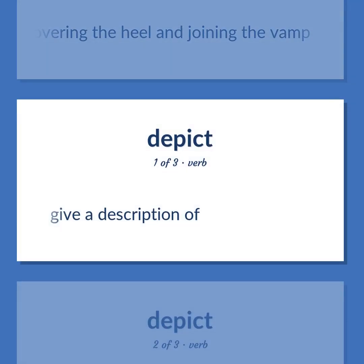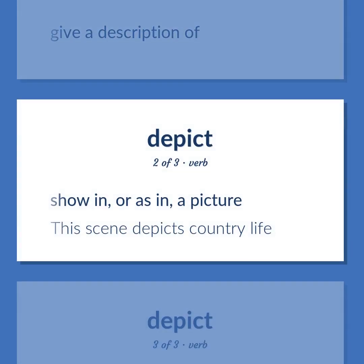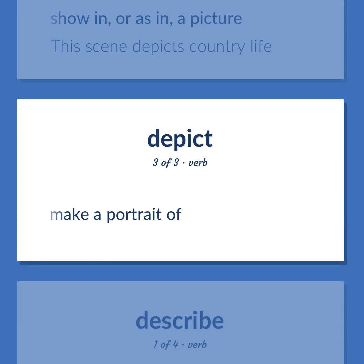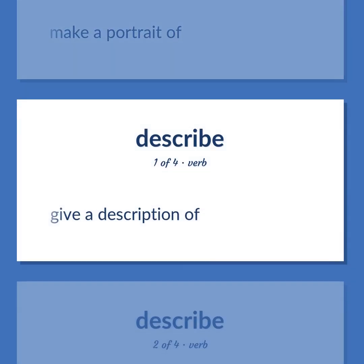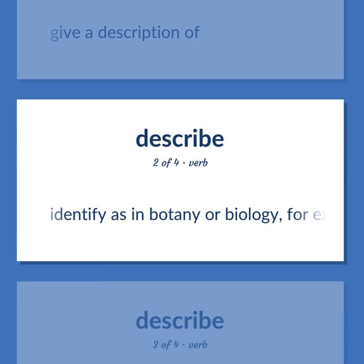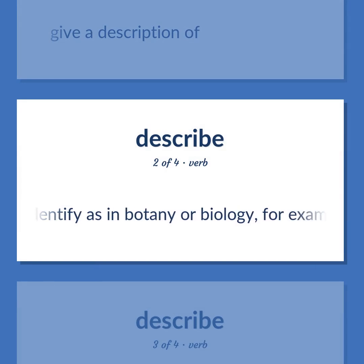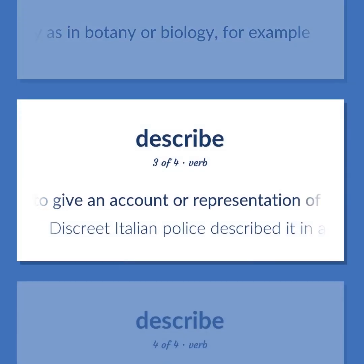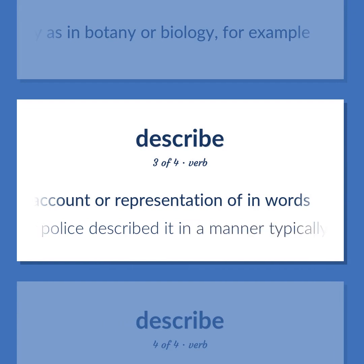Give a description of. Show in, or as in, a picture. This scene depicts country life. Make a portrait of. Give a description of. Identify, as in botany or biology, for example. To give an account or representation of in words. Discrete Italian police described it in a manner typically continental.